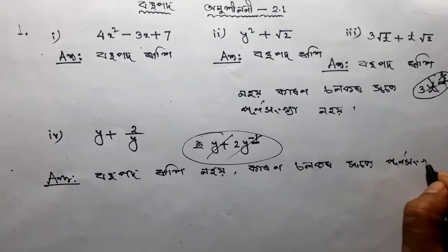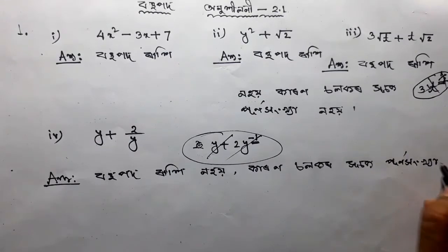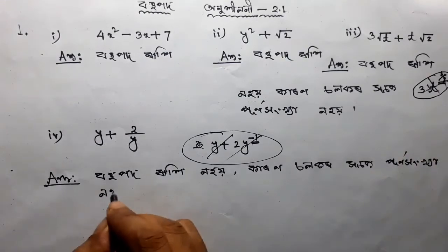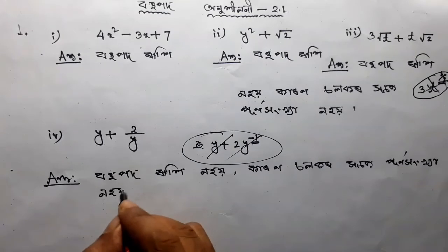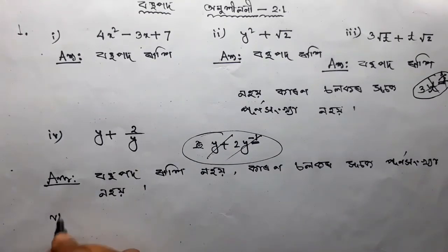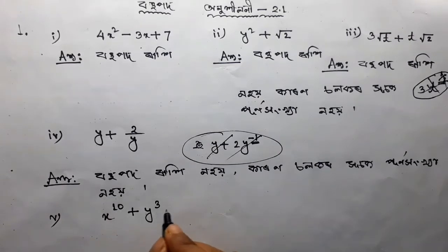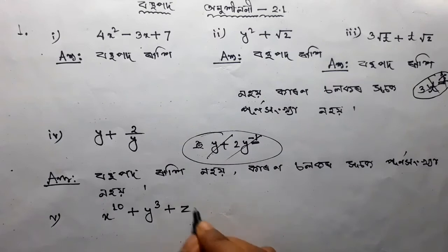I have no more. Next, number 5: x to the power 10, y cube plus z to the power 50.